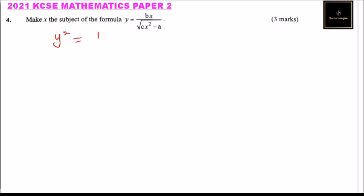So we say y squared. When you square this, you get b squared x squared. In the denominator, you get rid of the square root sign and we get cx squared minus a.